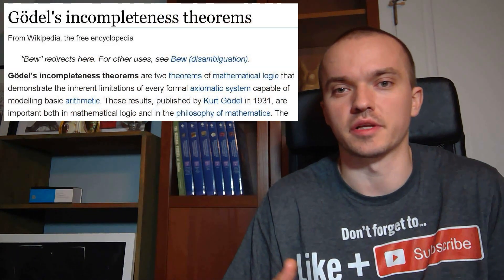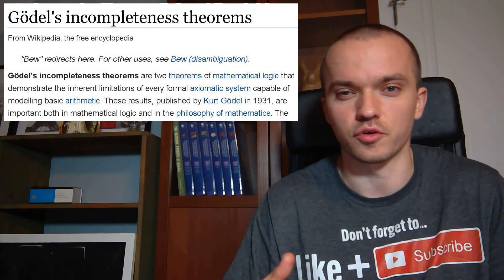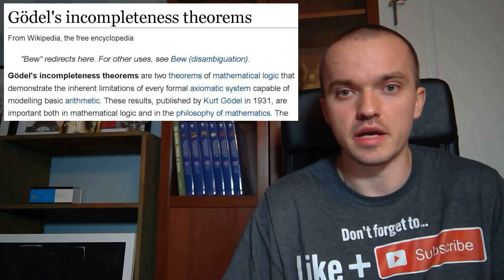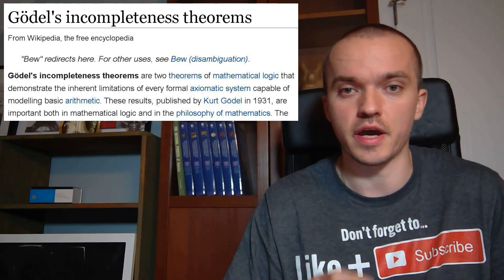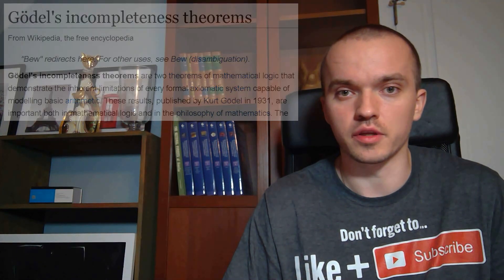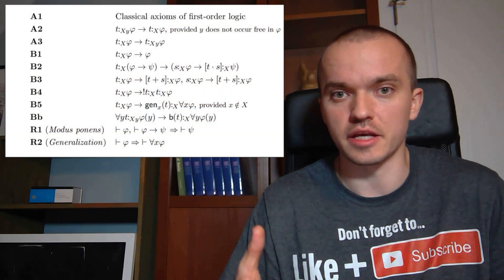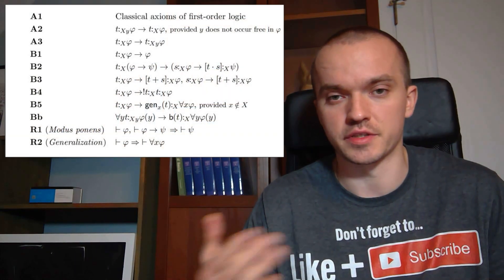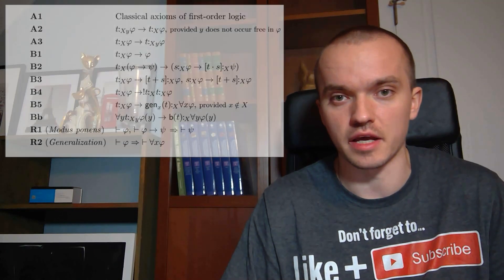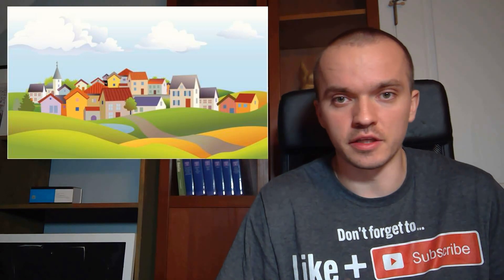It says that every time we choose any set of axioms, we can always find some statement for which we cannot prove or disprove it. In other words, for any set of axioms, there is always going to be a contradiction. So for example, let's take our object as a village.